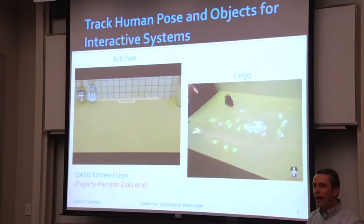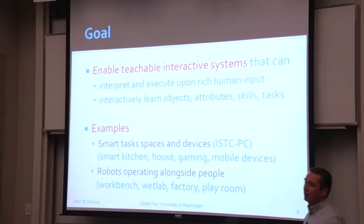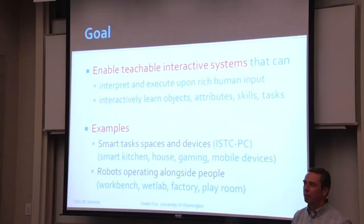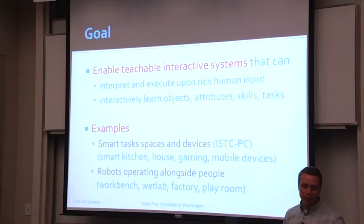We are now getting into an area where we can try to build interactive systems that you can interactively teach. For example, if you have a robot with certain object recognition capabilities, there will always be objects the robot hasn't seen before. You should be able to just show the robot and say, 'That's a water bottle,' and the robot should then know what a water bottle means and what it looks like. We want to build systems we can teach by demonstrating things to them — in object recognition, but also teaching them activities and procedures.